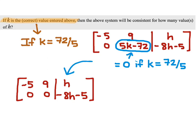And we know that this will only be consistent if the negative 8h minus 5 is equal to 0. So, this entry right here has to be equal to 0, so that we'll get a 0 equals 0, otherwise it will be a contradiction.